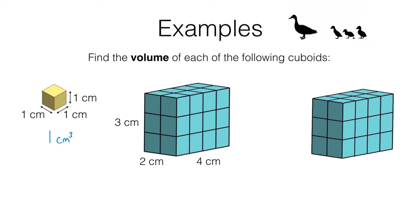Hopefully you can see that we have three layers of eight blocks. So there are three times eight blocks in this cuboid and that means we can fit 24 of these yellow blocks in here. Three times eight is 24. So the volume of this cuboid is 24 centimetres cubed or 24 cubic centimetres.